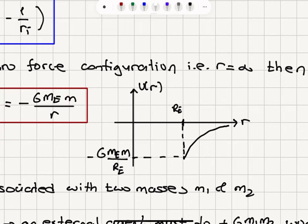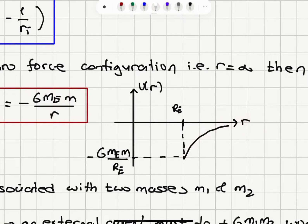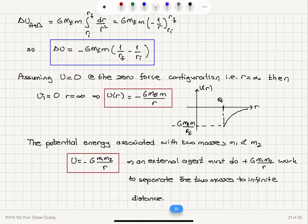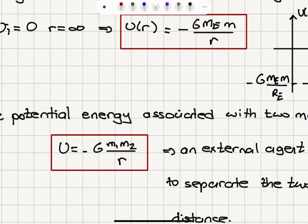So the potential energy as a function of r, with the assumption that the zero point of potential energy is at infinity, is minus G M_e m over r. If we plot this: at the Earth's surface the distance between the two objects is the radius of the Earth, so the potential energy is minus G M_e m over R_e. At infinite distance it goes to zero — it goes as 1 over r. The potential energy associated with any two masses m1 and m2 will be minus G m1 m2 over r.